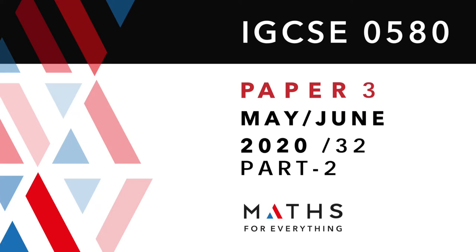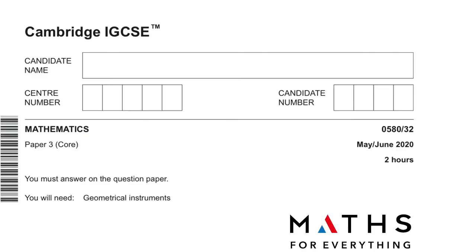Assalamu alaikum, welcome to my channel. Before we begin, do subscribe to my channel and share it with your friends. Today we are going to solve Cambridge IGCSE Mathematics Paper 3 Core, 0580 Variant 32, May/June 2020, question number four onwards.